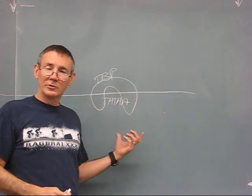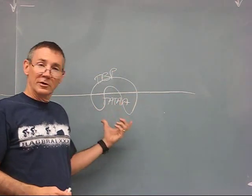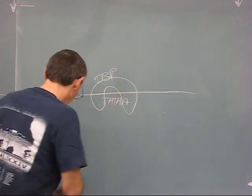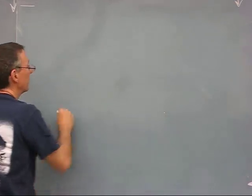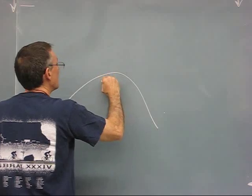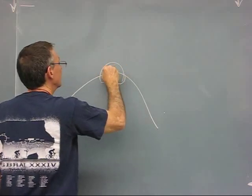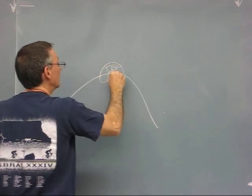TATA binding protein binds to the TATA box. When it does so, it bends the DNA through a fairly sharp angle, so it would look like this. TBP bound to the TATA box.